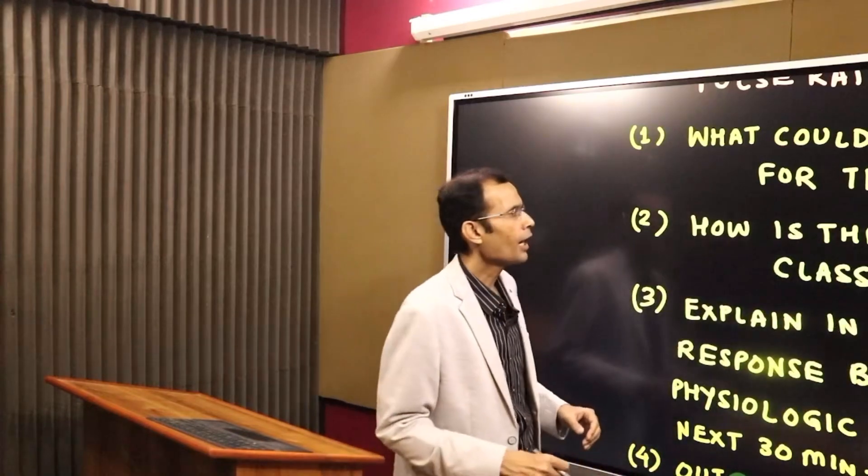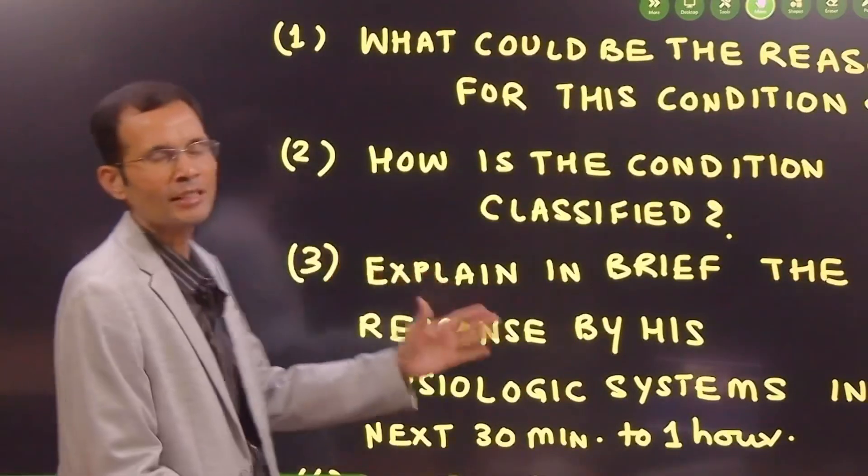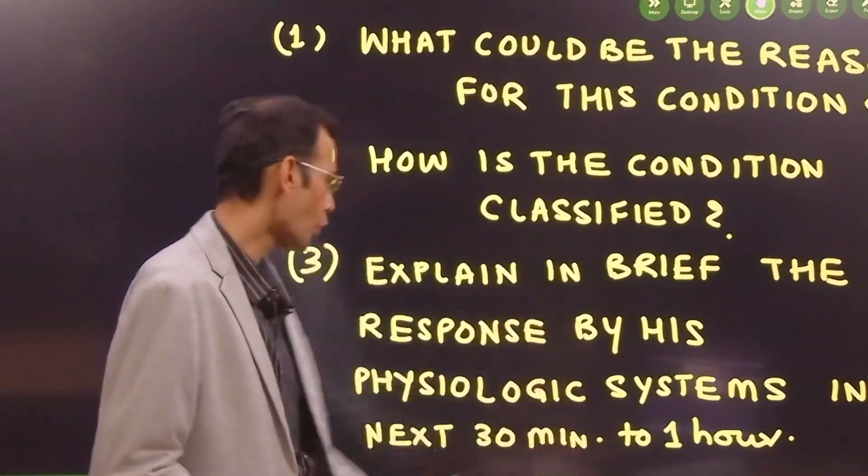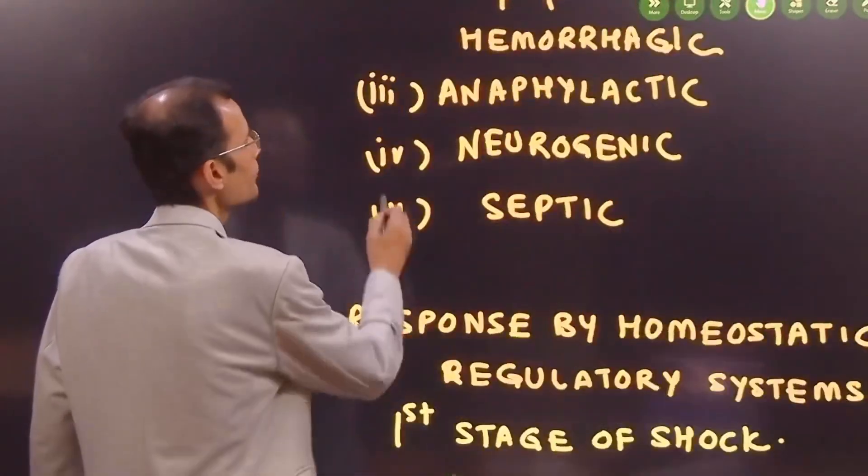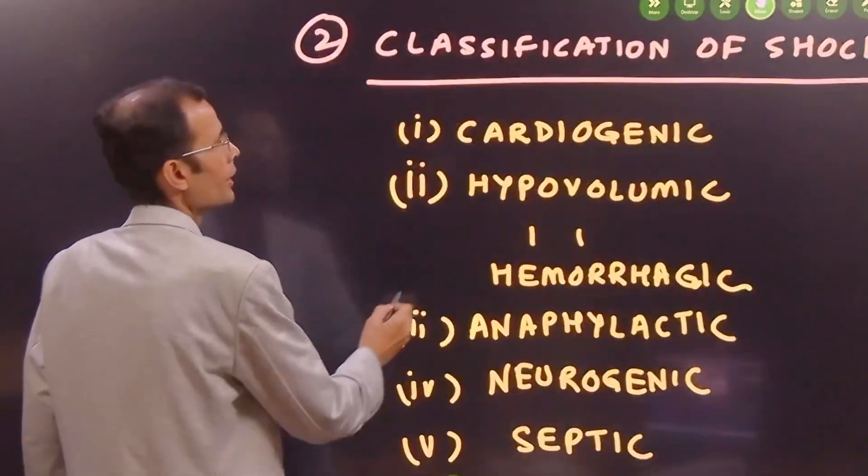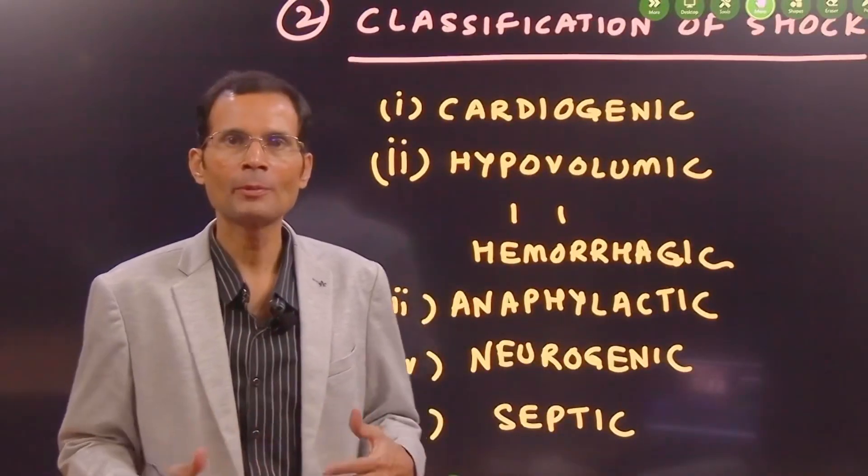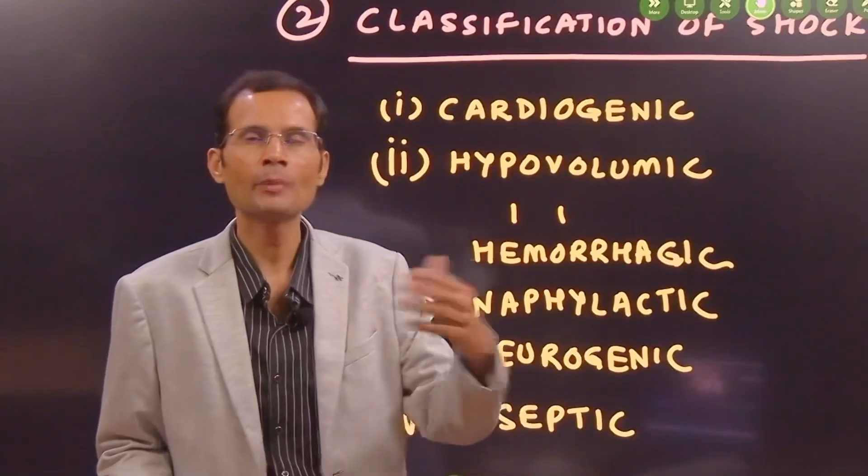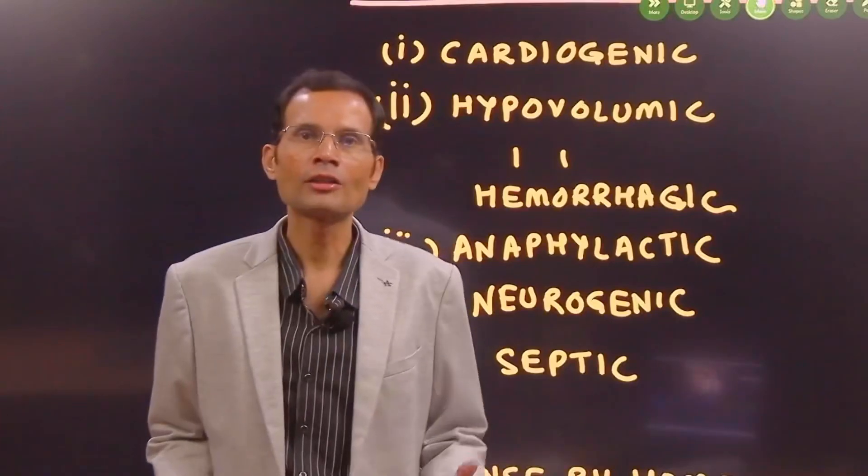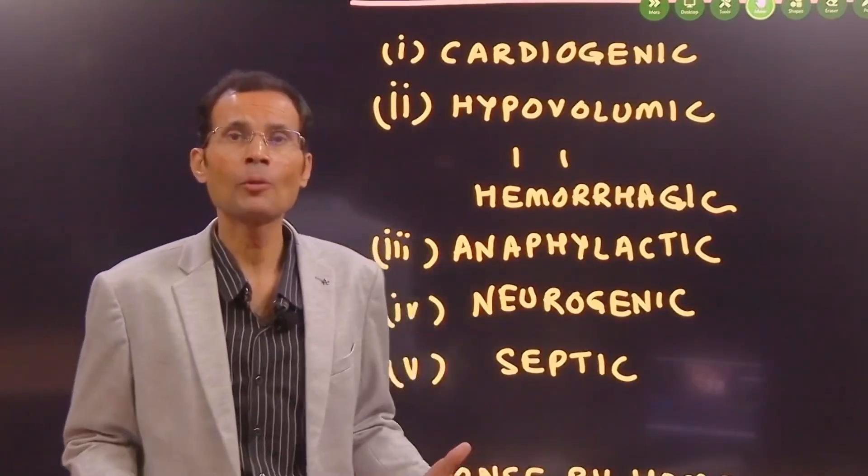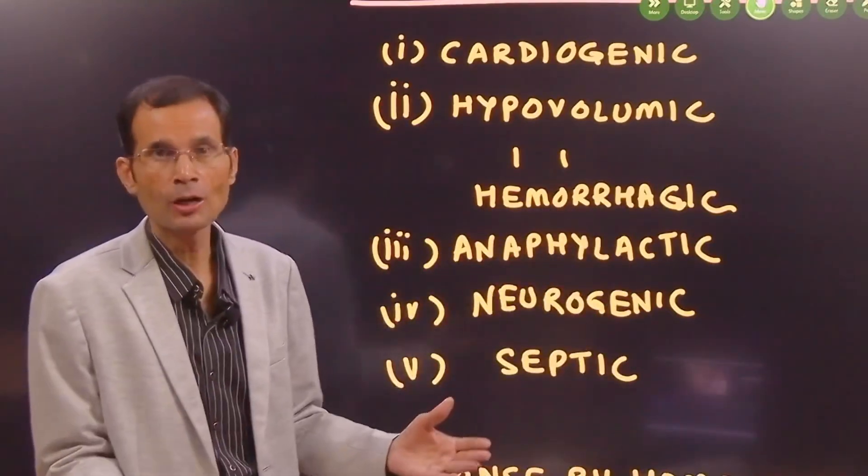There was release of chemical mediators like histamine and SRSA - slow reacting substance of anaphylaxis - and that has led to profound vasodilation and a fall in blood pressure. Second, how is this condition classified? They are asking about classification of circulatory shock.